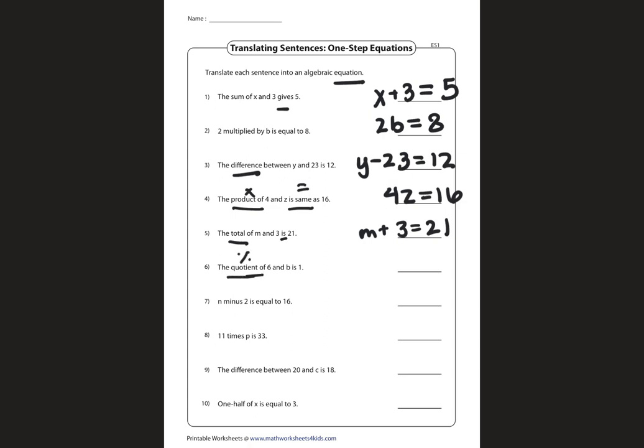The quotient of 6 and b is equal to 1. The quotient of 6 and b - b is indicated second, so we're going to have it on the bottom as the denominator. 6 over b is equal to 1.